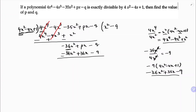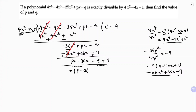Now subtract again. Change the signs to plus, minus, plus. The minus 36x² and plus 36x² cancel. We are left with px minus 36x, which is (p minus 36)x, and the constant term minus q plus 9. We cannot divide further, so this is the remainder, and it must equal 0.